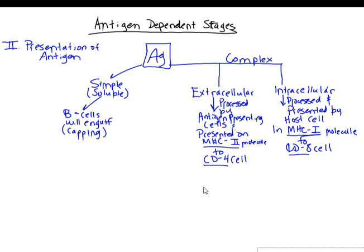Stages two, three, and four are the antigen-dependent stages, where the cells encounter the antigen. B cells can respond to simple, soluble antigen that binds to B cell receptors and is engulfed by a process called capping. They do not require an MHC complex to have the antigen presented — they can directly respond to antigen. Complex antigens can be extracellular or intracellular, and are processed and presented by antigen-presenting cells such as macrophages, dendritic cells, and B cells.